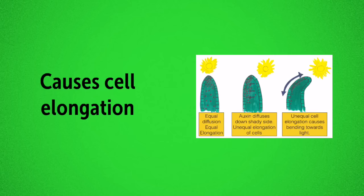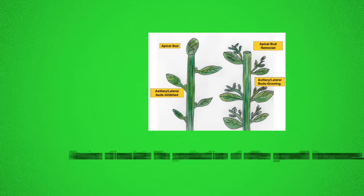IAA and auxins cause cell elongation and we studied auxins in detail when we looked at phototropism. It's important to note that auxins can also stimulate the production of other growth hormones too.